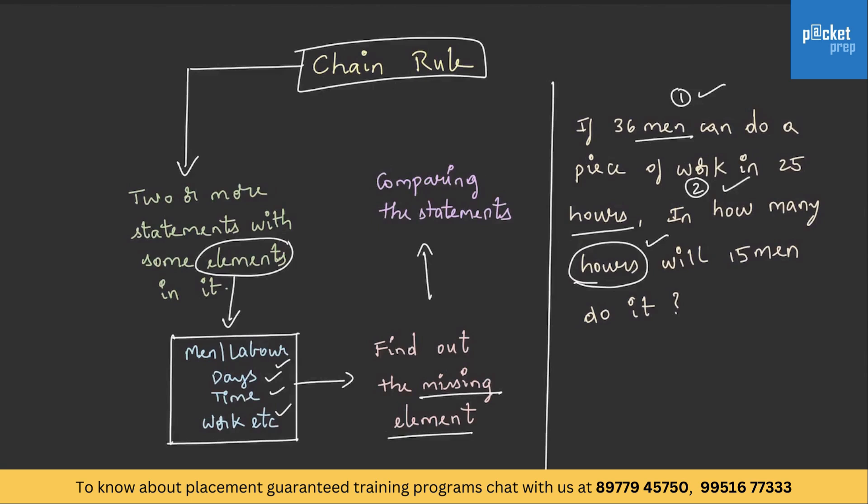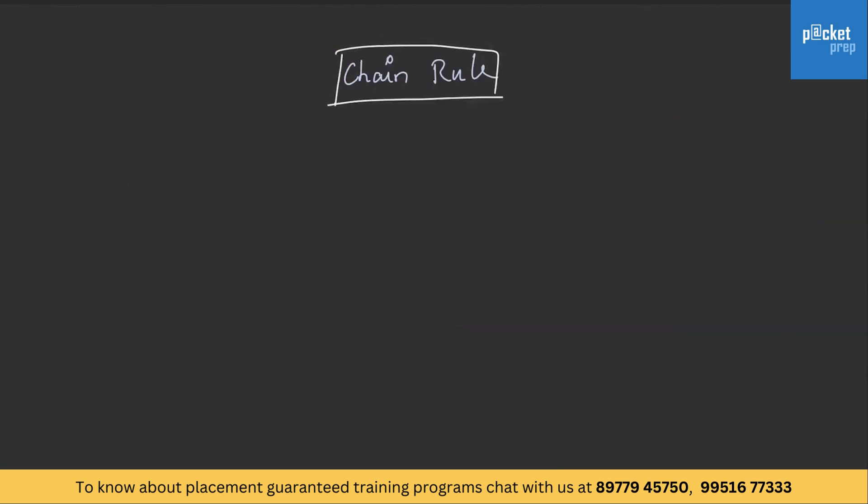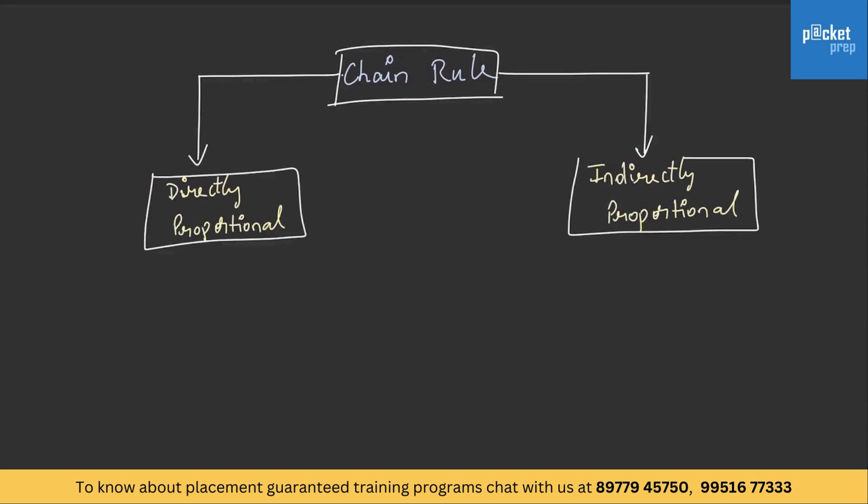We will have a clear picture when we solve the problems. Now, let us understand the concept of directly proportional and indirectly proportional, which is significantly important in solving the problems in chain rule. What does directly proportional mean? If on increase or decrease of one quantity, the other also increases or decreases to the same extent. This is known as directly proportional.